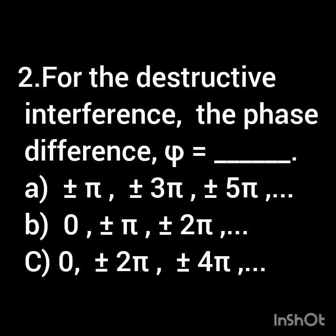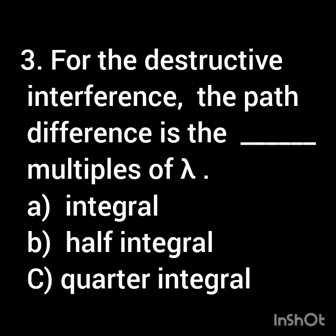For destructive interference, the phase difference phi is equal to [blank]. For destructive interference, the path difference is [blank] multiples of lambda.